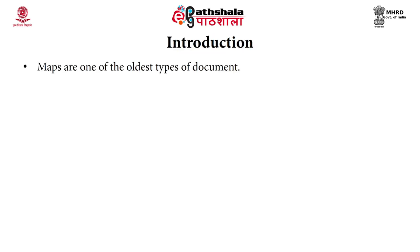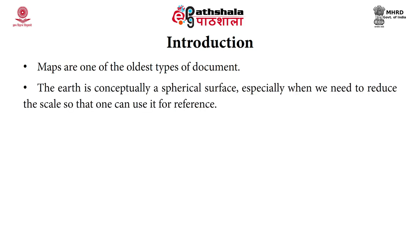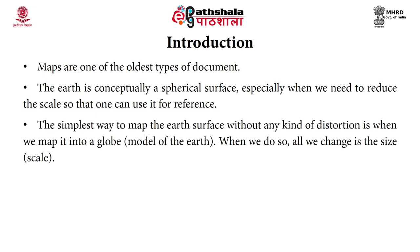Maps are one of the oldest types of documents, used from very ancient times to represent various features on the surface of the Earth and terrestrial objects. The Earth is conceptually a spherical surface. When we need to reduce the scale for reference, the simplest way to map the Earth's surface without distortion is to map it onto a globe — the model of the Earth — where we only change the size of the Earth.